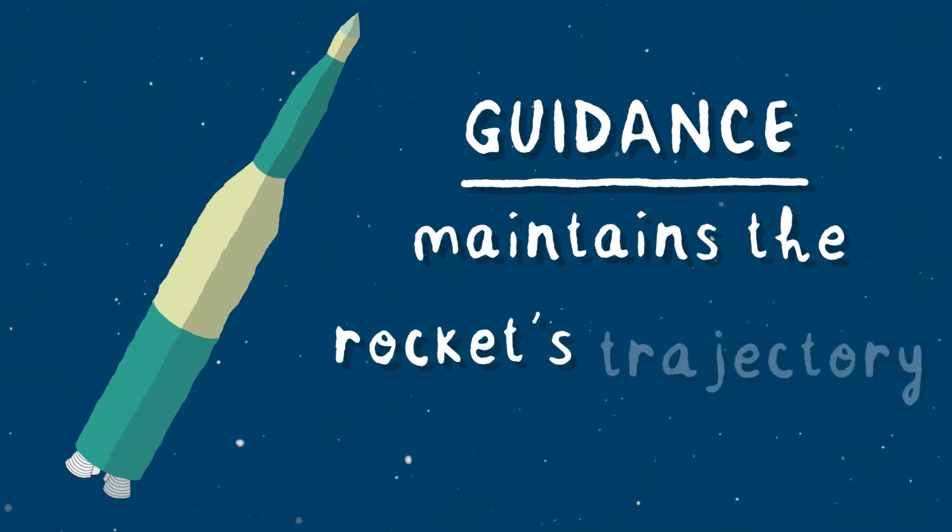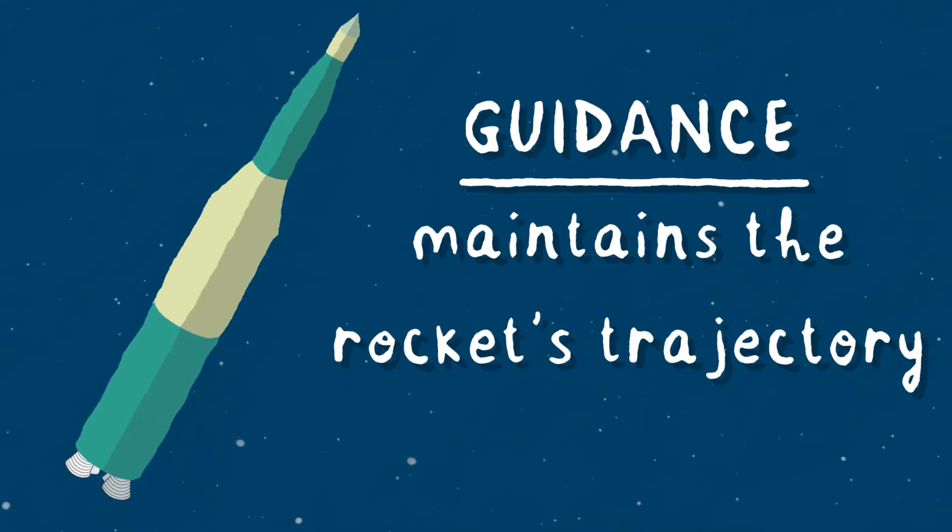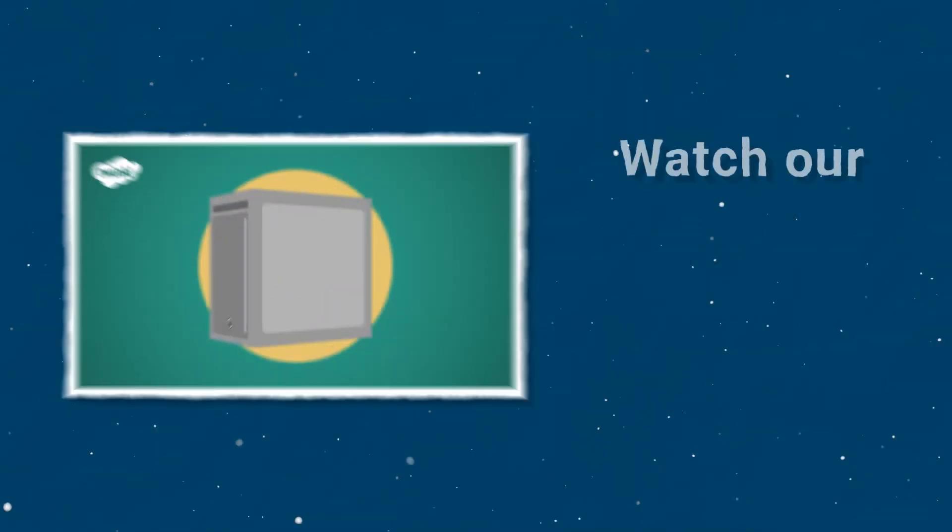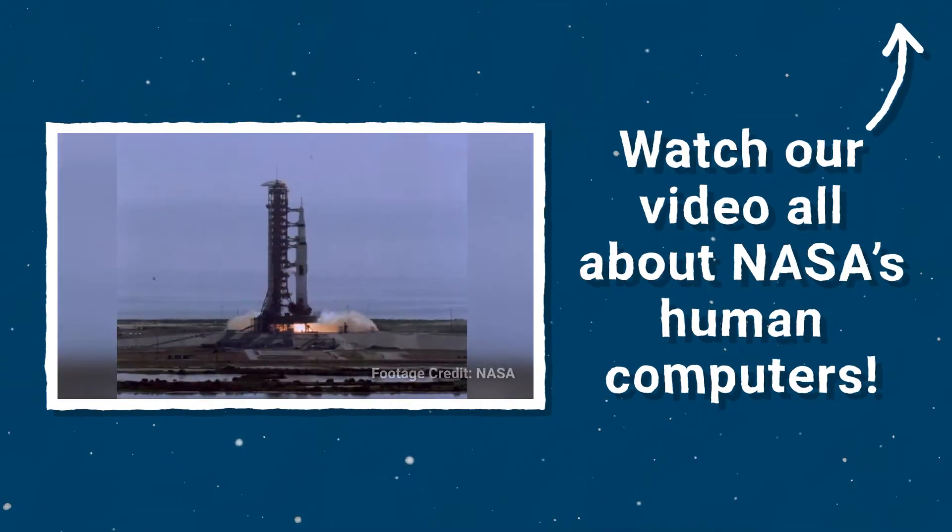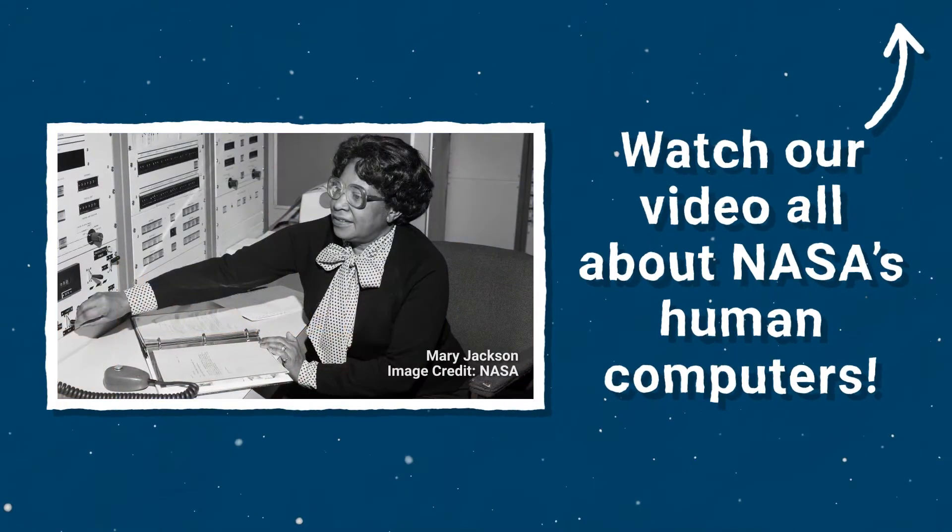The guidance system takes readings and maintains the rocket course. In the past, guidance systems would feed data back to Earth where human computers would need to interpret it.